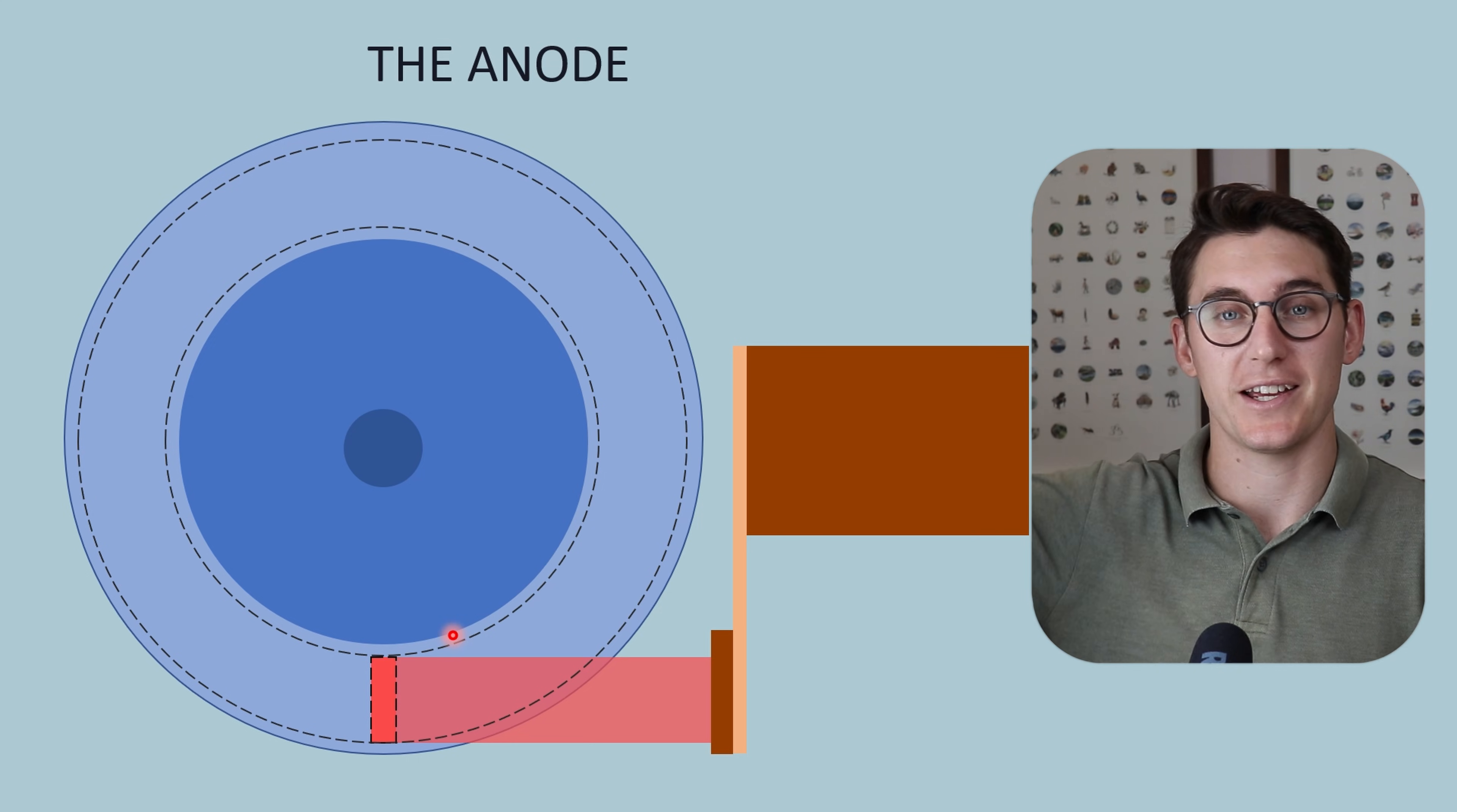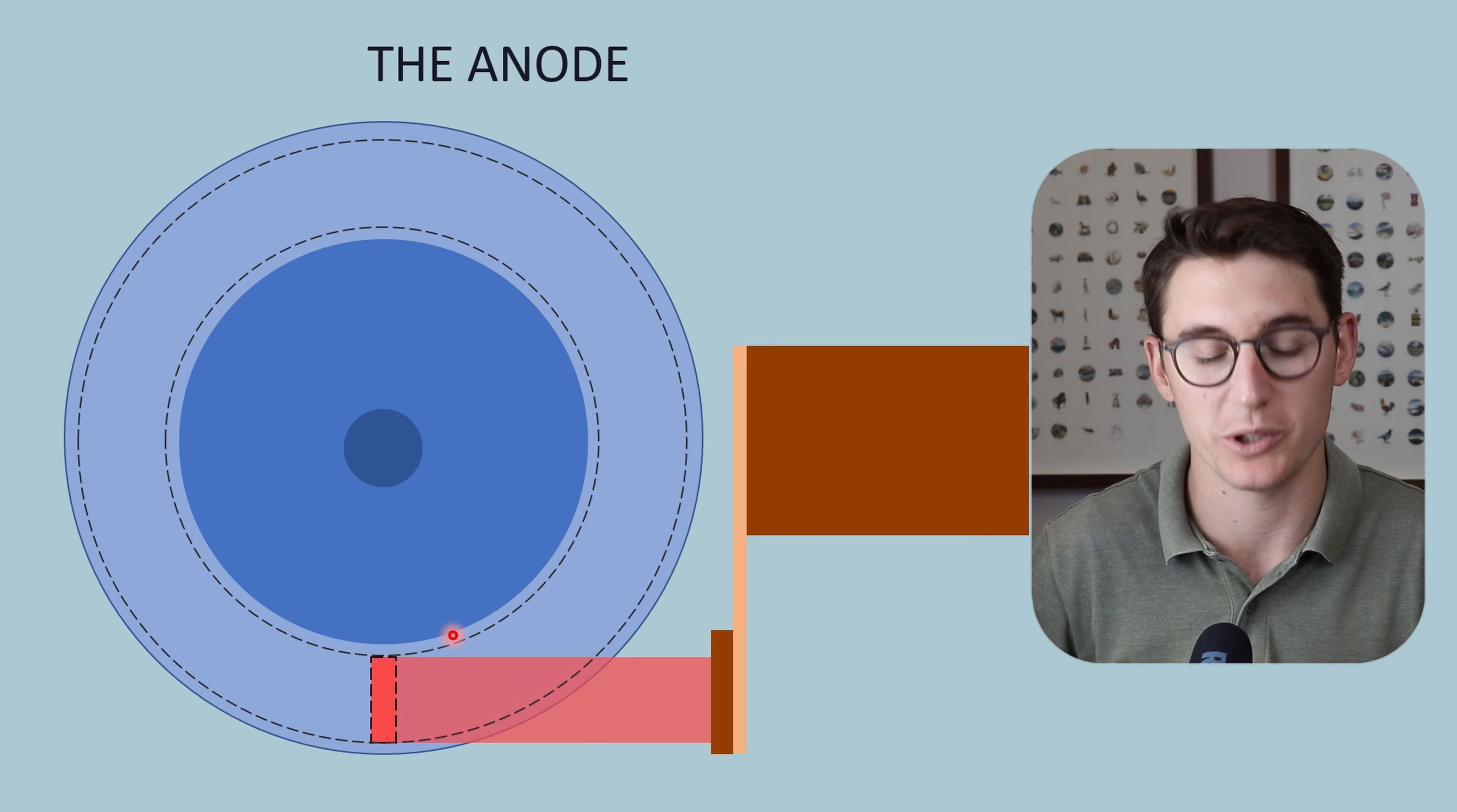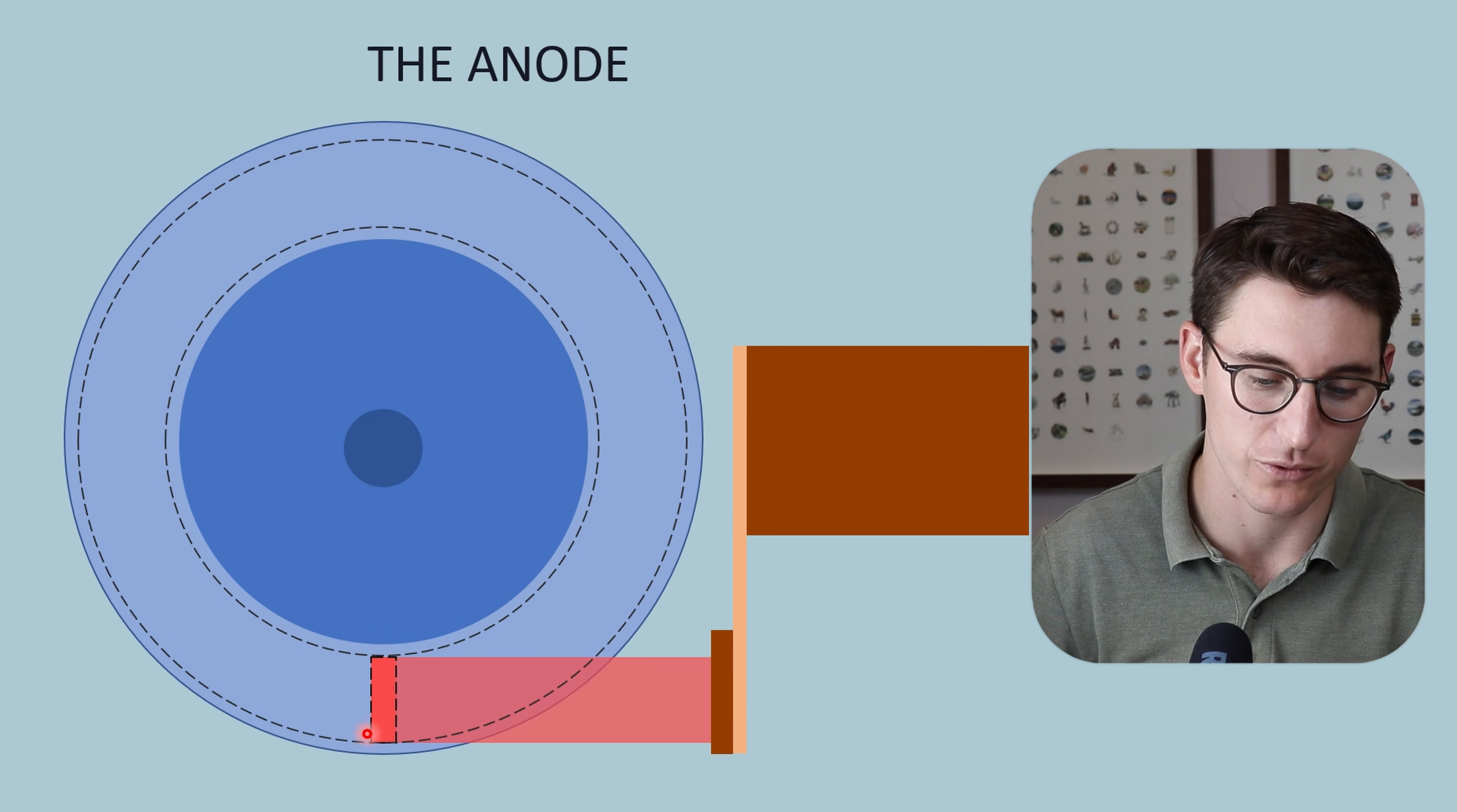We will see conduction, convection, and radiation within the x-ray tube, but radiation is the major mechanism for heat removal from the focal spot.